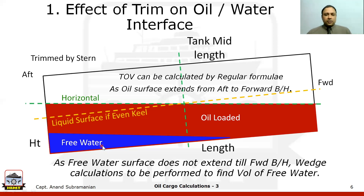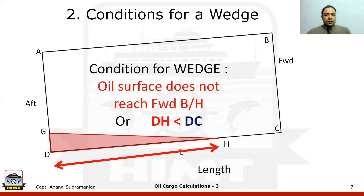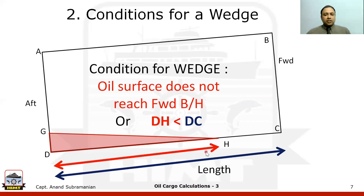Once you find out the volume of this free water, it has to be subtracted from the TOV to get what is called the gross observed volume. From then on, we can find out using the VCF and WCF by the regular method. The condition for forming a wedge is that the oil surface does not reach the forward bulkhead — the extent of the oil surface, DH, is less than DC, which is the length of the tank. If DH is less than DC, we say it is a wedge.